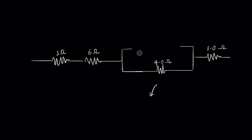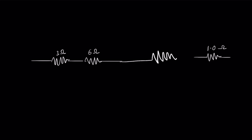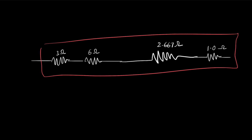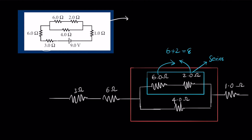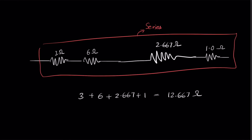This entire parallel section can be replaced with a single resistor of 2.667 ohms. Now all remaining resistors are in series, so we add them all: 3 + 6 + 2.667 + 1 = 12.667 ohms. The equivalent resistance for the entire circuit is 12.667 ohms. Always work from the most internally complex part outward, like reversing nesting dolls.